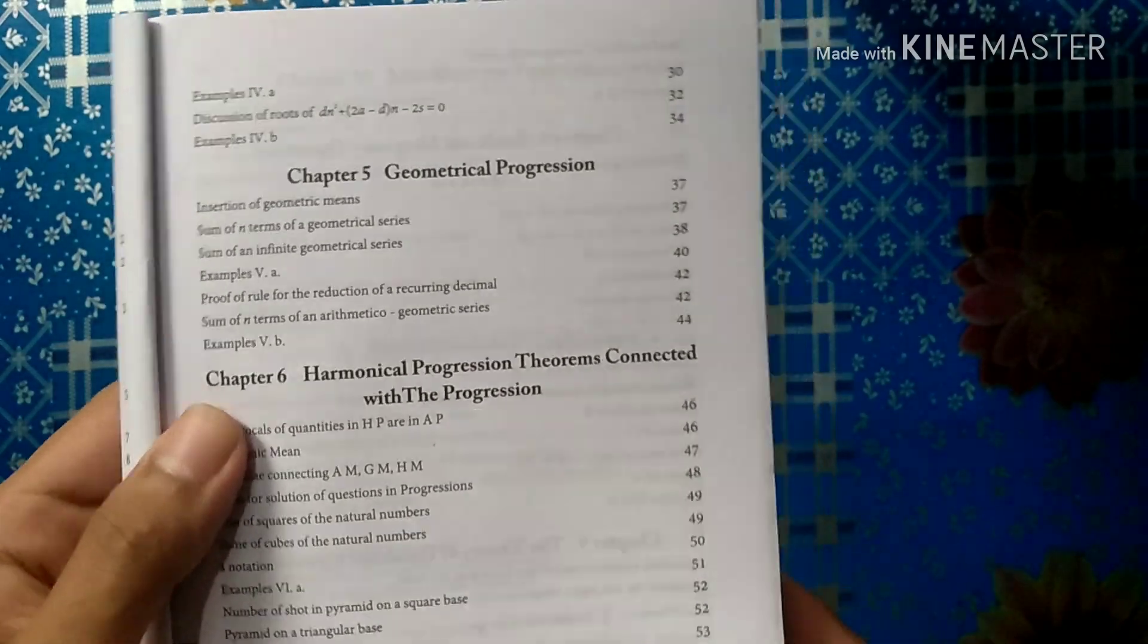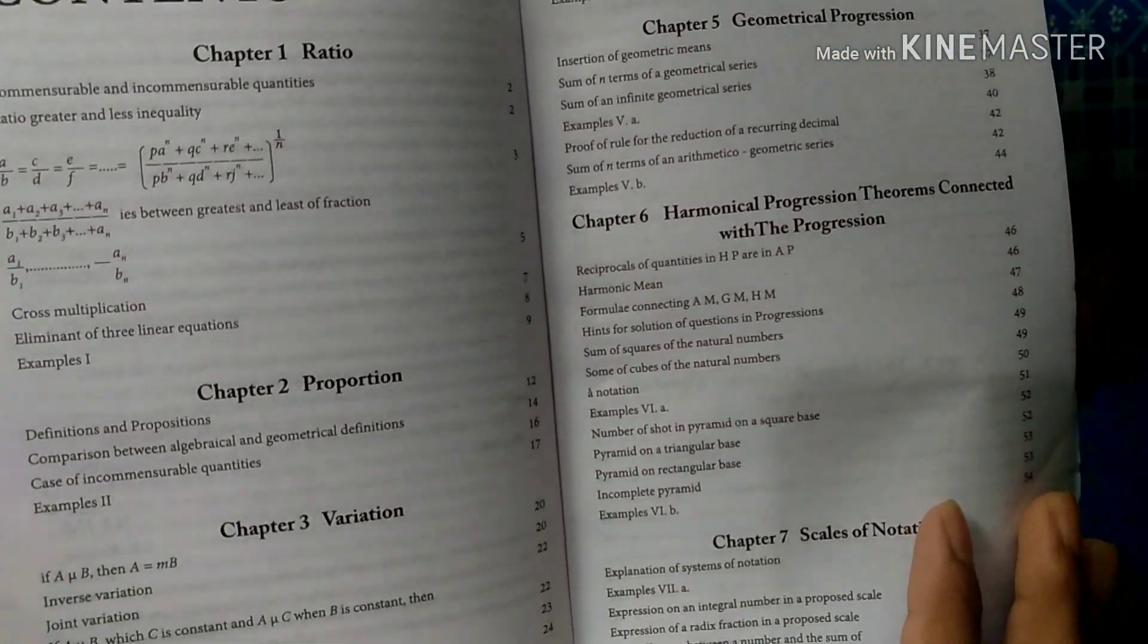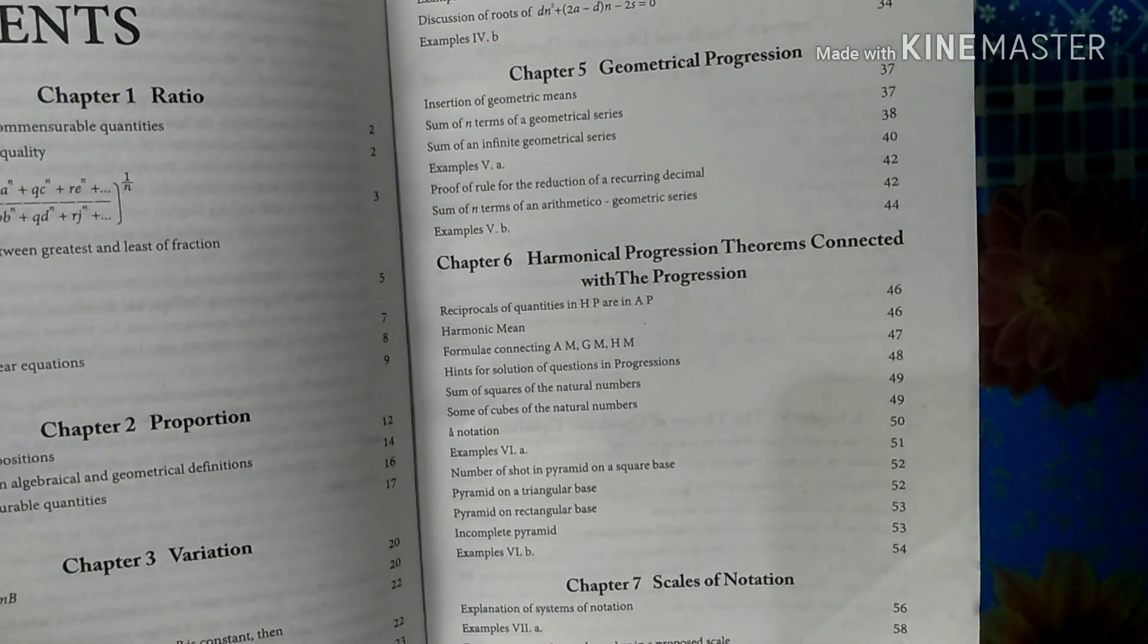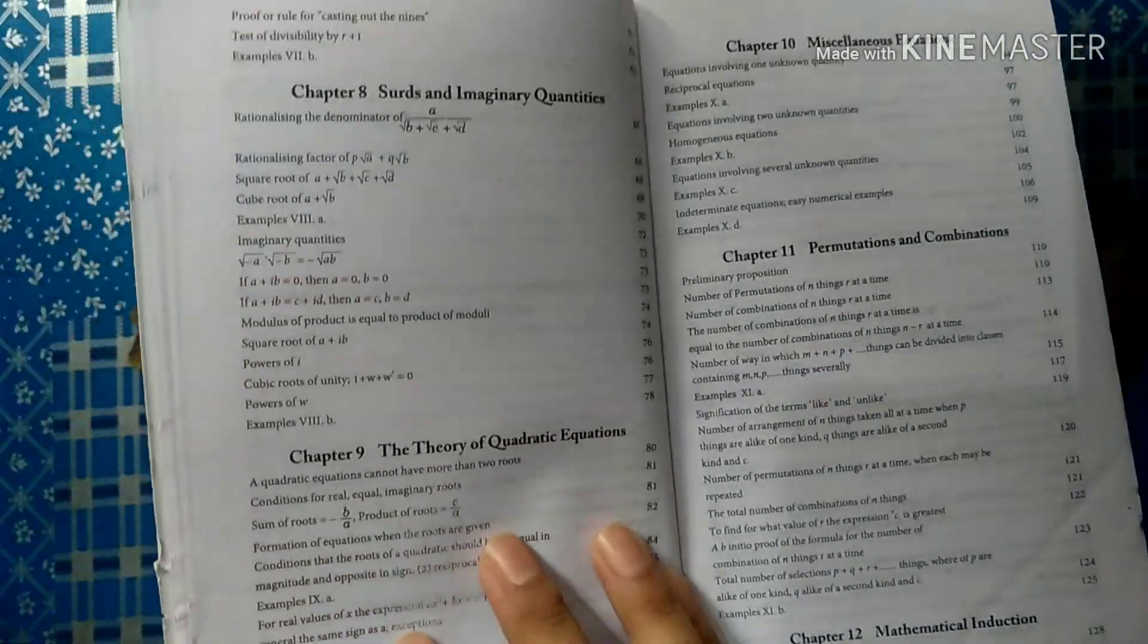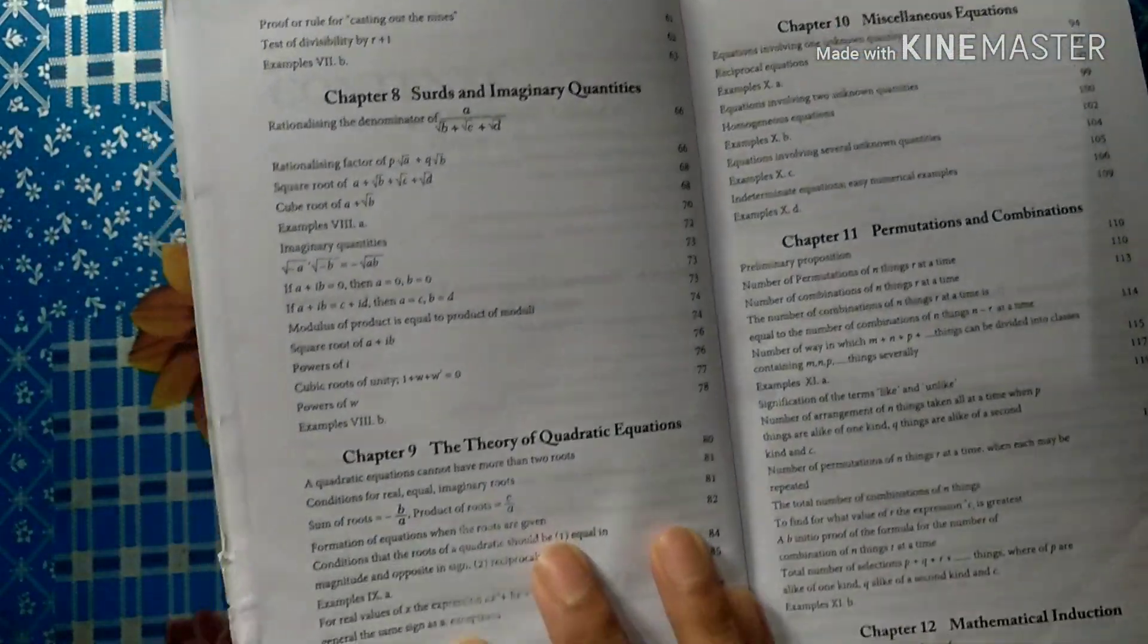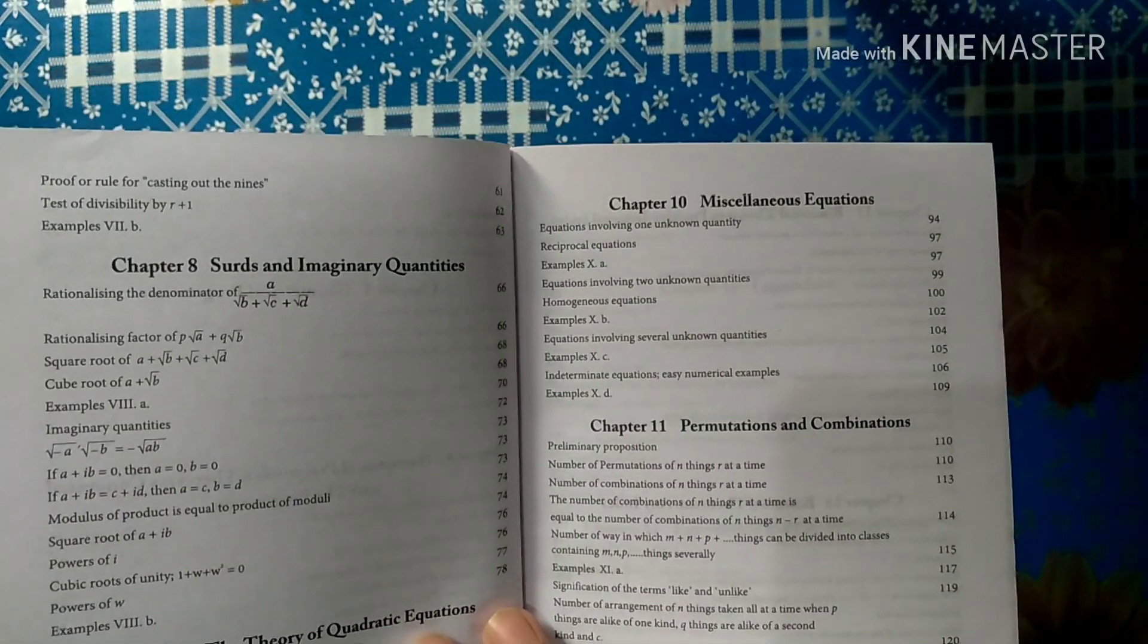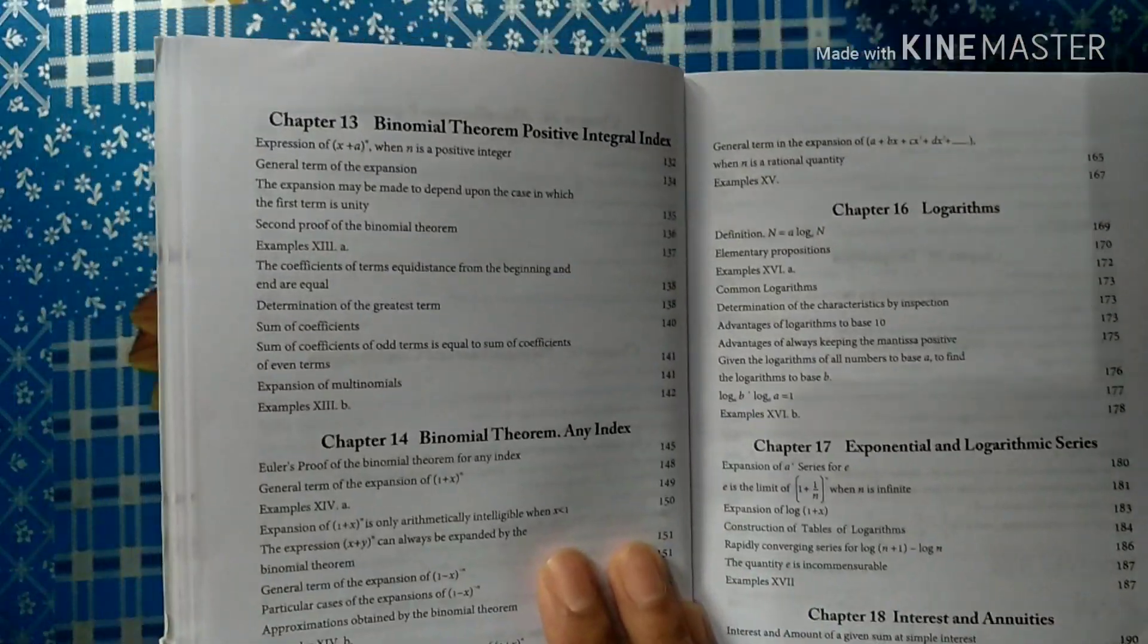Geometric Progression is very important. This sequence and series is in life. Although all of these are very important. Harmonic Progression, Scales of Notation, Surds and Imaginary Numbers, The Theory of Quadratic Equations, Miscellaneous Equations, Permutation, Combination, Mathematical Induction, Binomial Theorem.